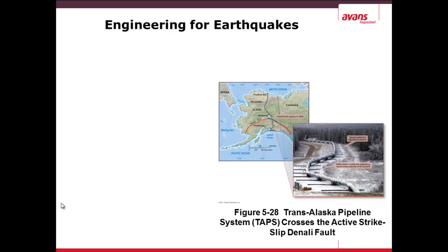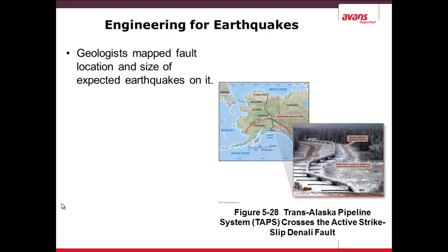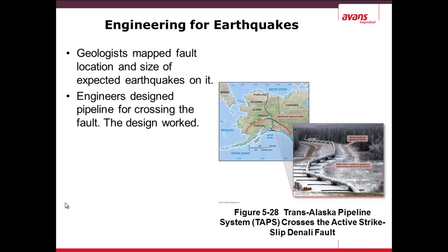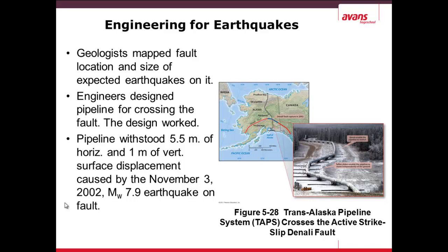We have had some engineering successes along these faults. An example is the Trans-Alaska Pipeline. Geologists mapped the fault location and size of expected earthquakes. Had they done nothing, an earthquake along this transform fault would have snapped the pipes, similar to the fence in the San Andreas region. Engineers designed a new system, somewhat like a rail system, to absorb seismic waves. The pipeline withstood a 5.5-meter horizontal displacement and a 1-meter vertical displacement in a magnitude 7.9 earthquake on November 3rd, 2002.